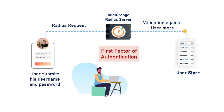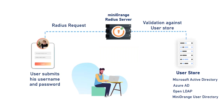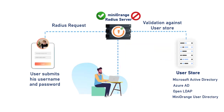The user can be validated against any user directory like Microsoft Active Directory, Azure AD, OpenLDAP, or you can keep users in the miniOrange user directory as well. After the first level of authentication, miniOrange prompts the user with two-factor authentication and grants or revokes access based on the 2FA input by the user.